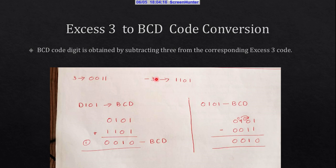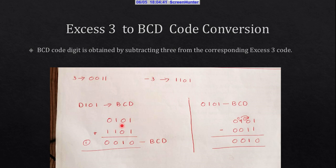Another way is to take the negative of 3 and add it to the XS3 code. The negative of 3 is 1101, obtained by taking the 2's complement of 3. Adding 1101 to the XS3 code 0101 gives us 0010, which is BCD 2. Both methods give the same result.